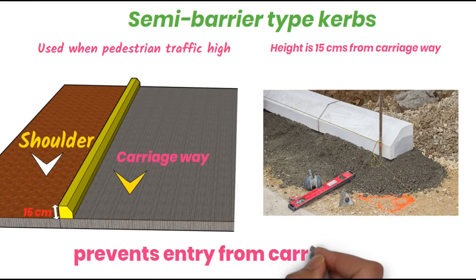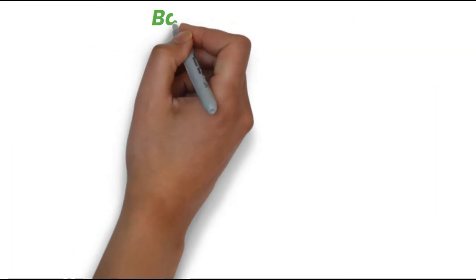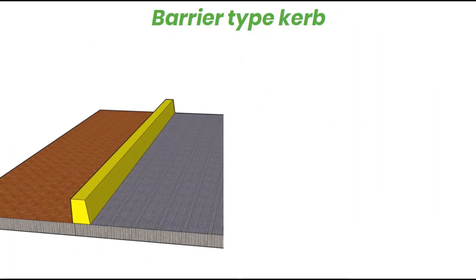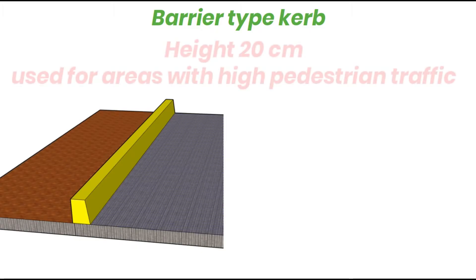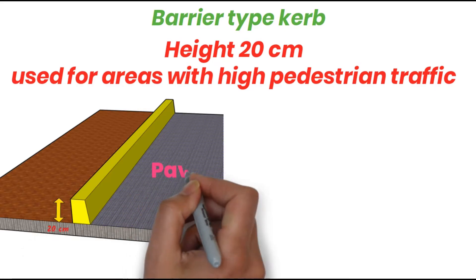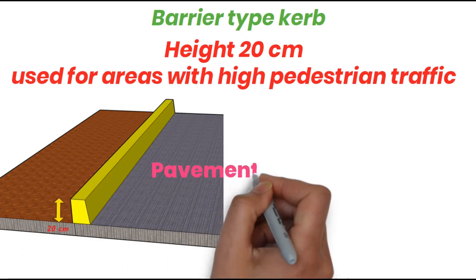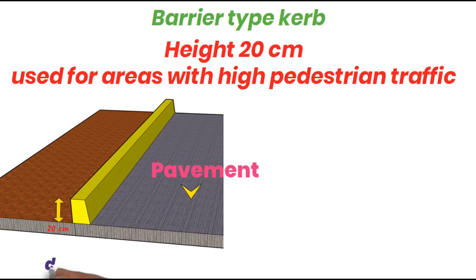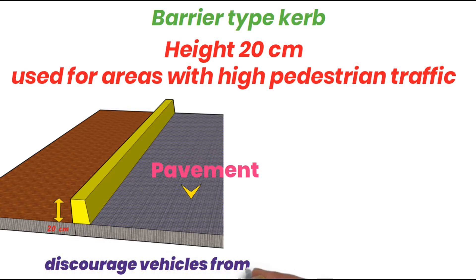Next is barrier type curbs. The height is 20 cm and they are used for areas with high pedestrian traffic where pedestrians use the shoulder area as footpaths. This barrier type curb discourages vehicles from leaving the pavement area or carriageway.